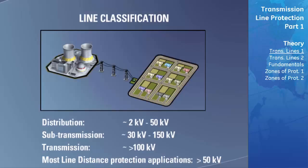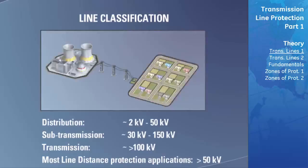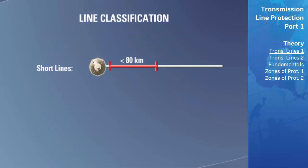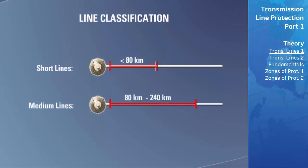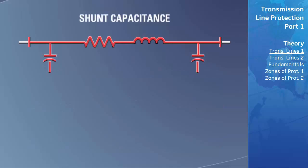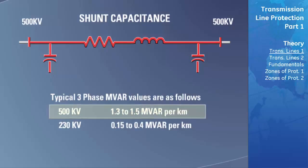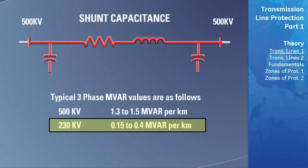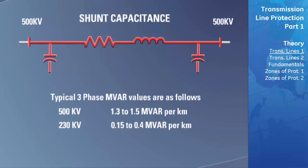The lengths of transmission lines have been classified into three categories. Short transmission lines are less than 80 kilometers in length. Medium transmission lines are roughly between 80 and 240 kilometers. Long transmission lines are greater than 240 kilometers in length. Typical three-phase MVAR values are 1.3 to 1.5 megavars per kilometer for 500 kilovolt lines and 0.15 to 0.4 megavars per kilometer for 230 kilovolt lines.